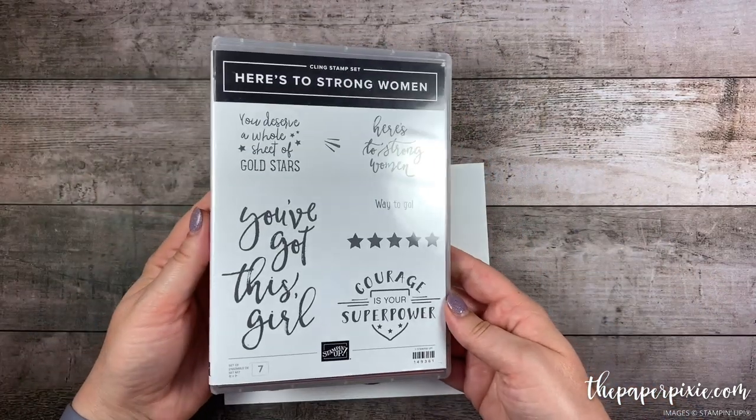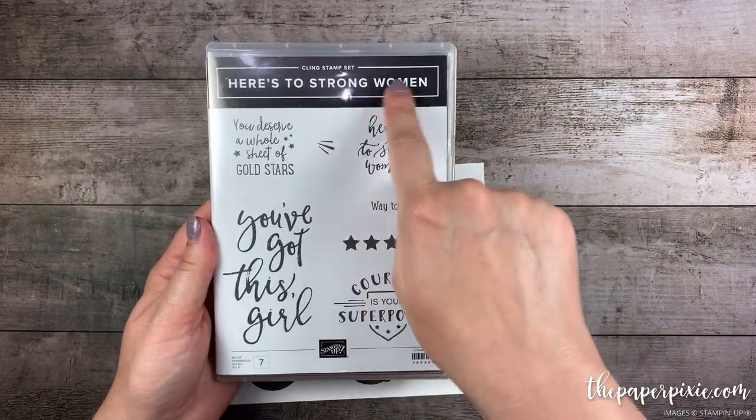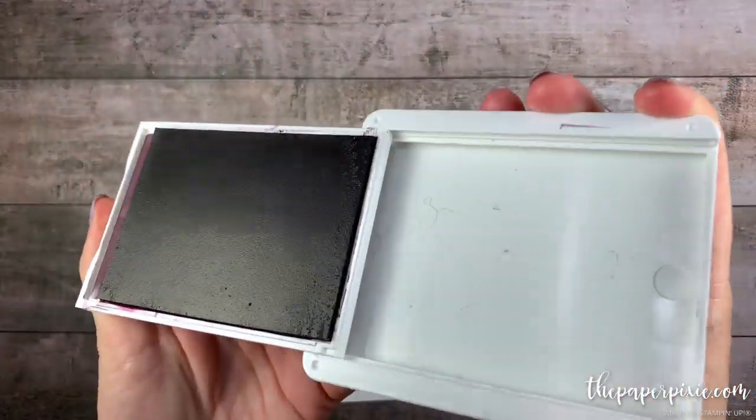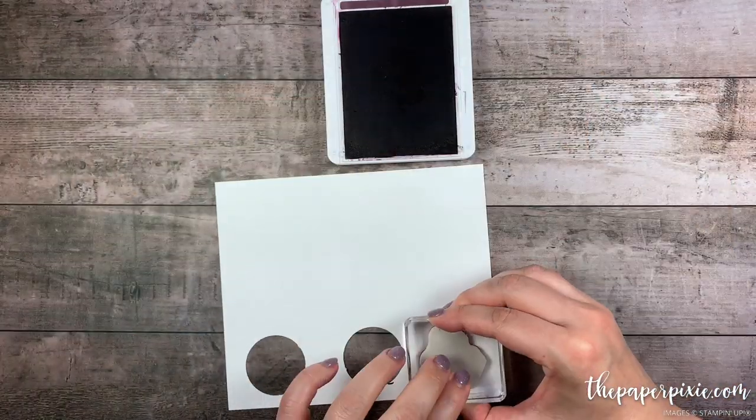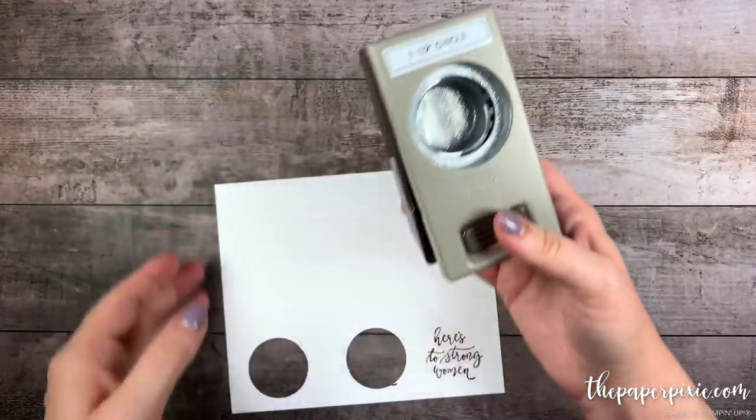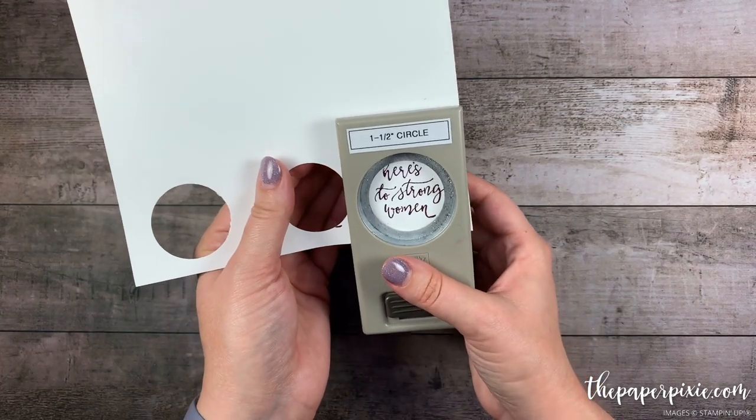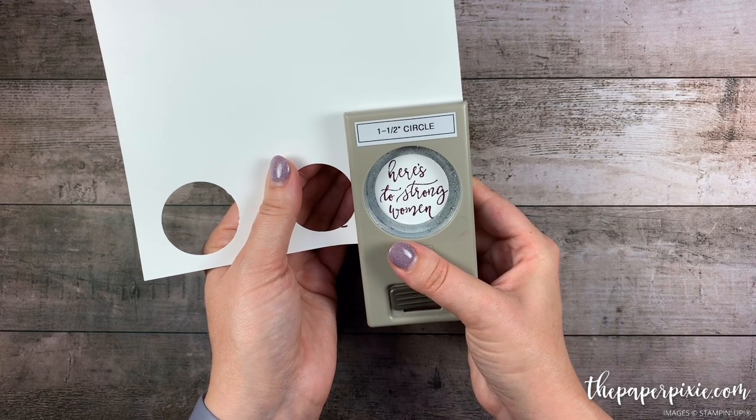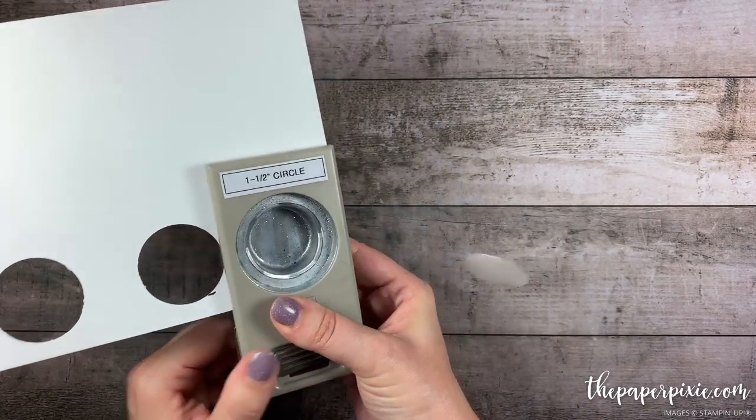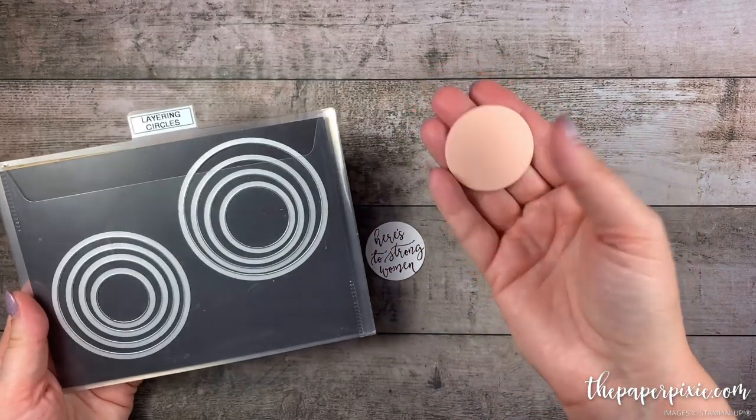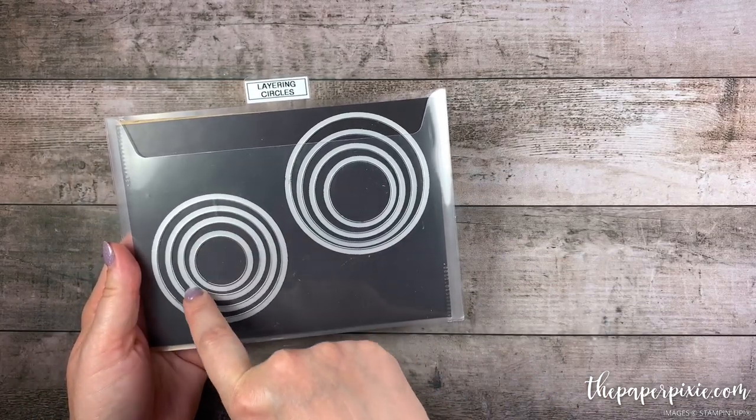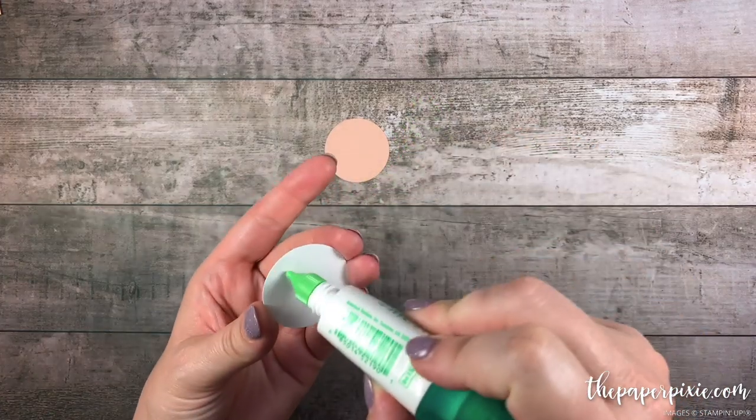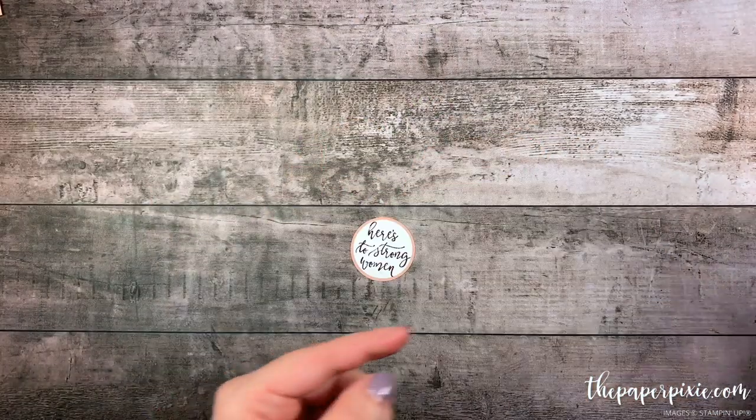All right. Let's do some stamping. We're going to be using the stamp set Here's to Strong Women and the sentiment Here's to Strong Women. I love that font. We're going to stamp that in Blackberry Bliss onto Whisper White. Then I'm going to take the one and a half inch circle punch and you're going to cut off a little bit of the bottom of the N, but you can get the majority of the sentiment in there. Then I've cut out a petal pink circle from the Layering Circles Framlets and it's the third smallest layering circle. I'm going to go ahead and glue those together.